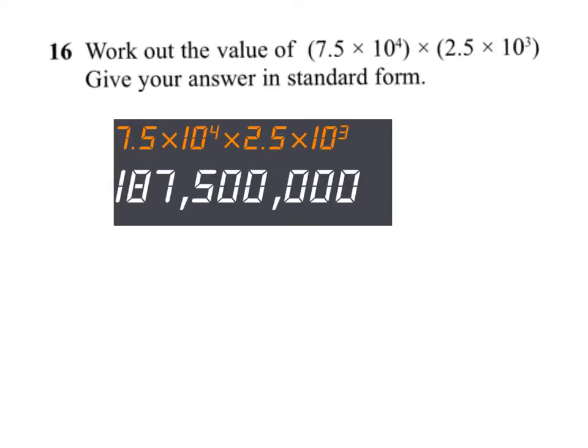You'll notice that there was no need to use brackets as every number was just multiplying another, so no need to use brackets there. The answer has come out as an ordinary number but remember it says give it in standard form. So what we can see is we've got 187,500,000.